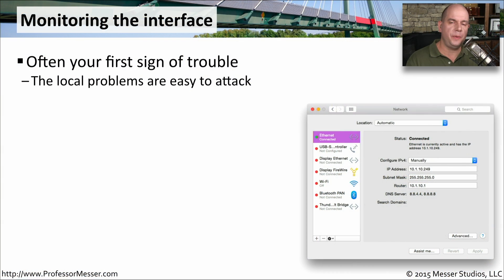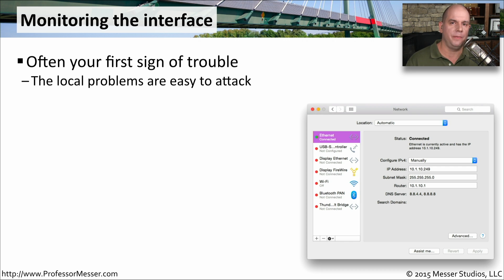As network professionals, we want to be sure that the devices connected to our network are performing optimally. It's important that we monitor the interfaces to make sure everything is working exactly as we expect. We can usually start to find small problems if we're monitoring our interfaces — maybe we're seeing errors over time, a bad cable, or a bad interface, and we can plan to swap those out to resolve the errors. Sometimes you can catch these problems before anybody even knows there was an issue.